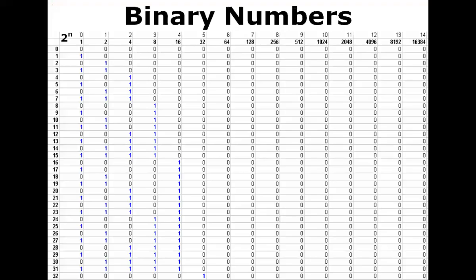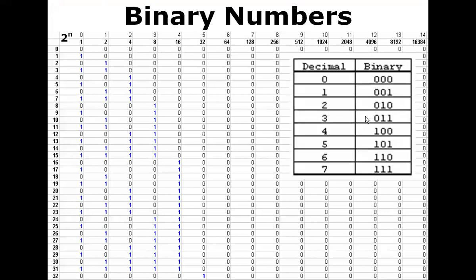Let us first look at binary numbers because there's a rhythm there too. You see on the left side the decimal numbers that we normally use, but our computers work with binary numbers. The position on the most right-hand side is two to the power of zero, which can either be a zero — which is off — or a one, which is on. The position next to that is two to the power of one, and next to that is two to the power of two, and so on. We read from right to left, though here I put it from left to right for easier explanation. The first column has values of two to the power of zero, which is one. The second column has values of two to the power of one, which is two. The third column is two to the power of two, which is four, and so on.